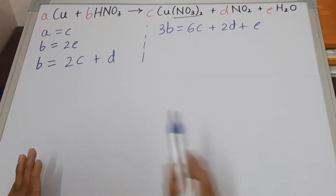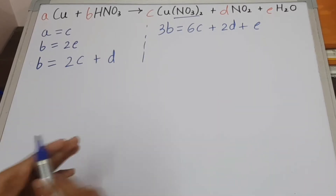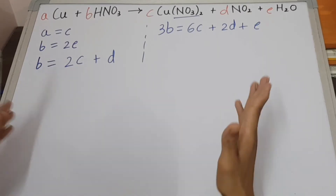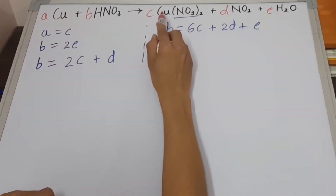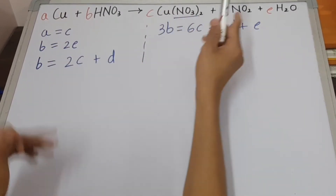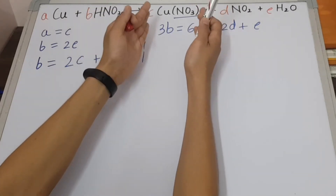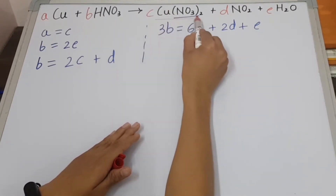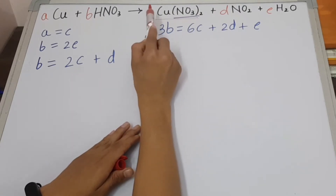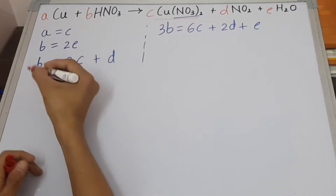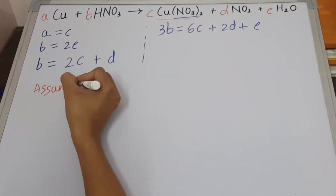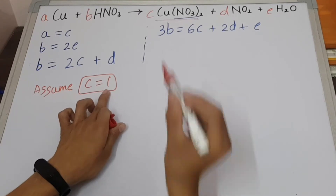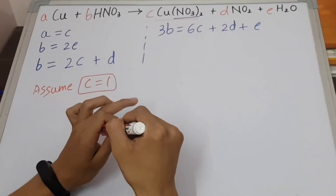Now we have to find the values of A, B, C, D, and E. First of all, we are going to find the compound which has the highest number of atoms in it. We can clearly see that Cu(NO3)2 has the highest number of atoms among all the compounds involved in this reaction. So we choose this compound — its coefficient is C — and we assume that C equals 1.